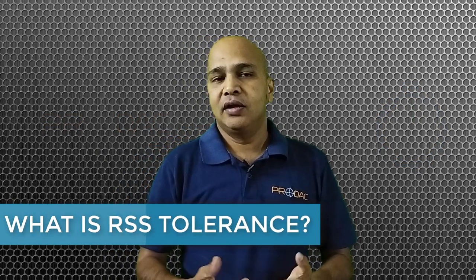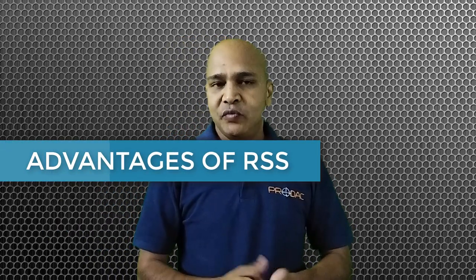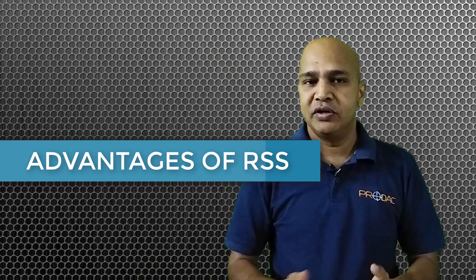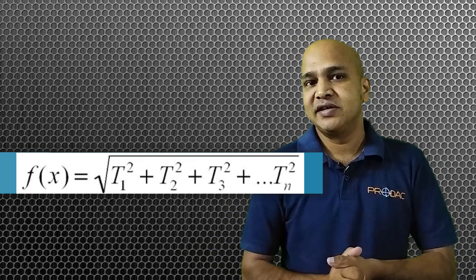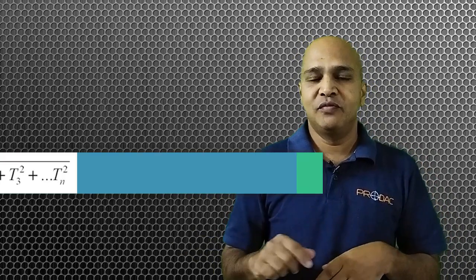What is RSS tolerance? What are its advantages? We will be discussing these two important topics in this video. The formula for RSS is shown on my right side. It's basically the square root of the summation of all the tolerances of all the individual components which are involved in the assembly. So that's how RSS is calculated.